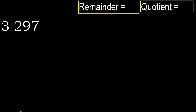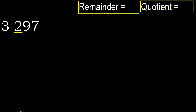297 divided by 3. 2 is less, therefore next. 29 is not less, therefore work with 29.